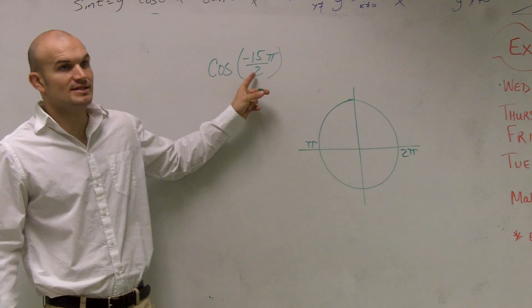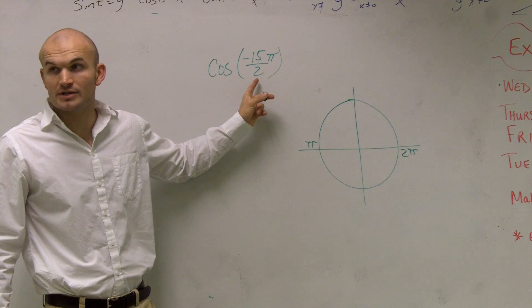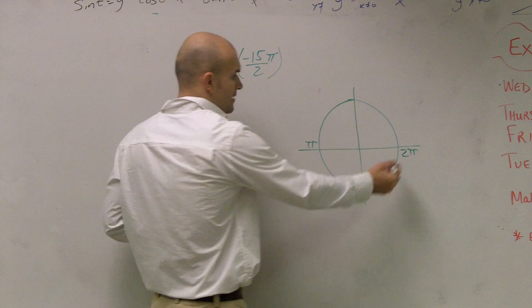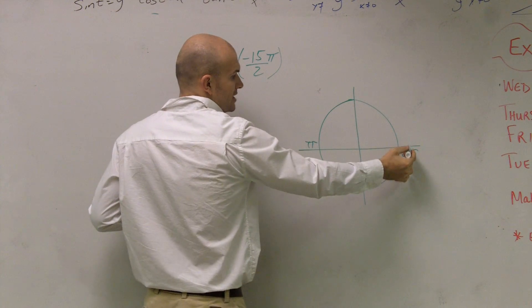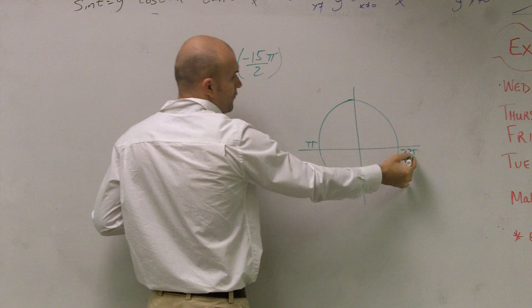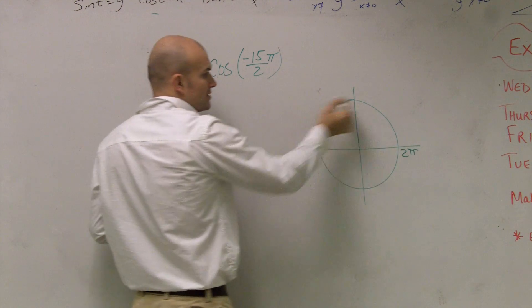Now, one thing I notice is this one is going in the negative direction. So actually, I'm going to be going down in this direction: π, 2π, 3π, 4π, 5π, 6π.